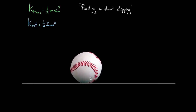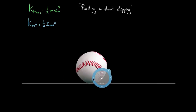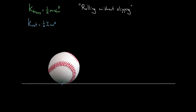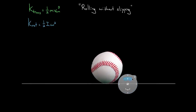This ball is going to be moving forward, but it's not going to be slipping across the ground. There's going to be no sliding motion at the bottom surface, which means at any given moment — and this is a little weird to think about — this baseball rolling across the ground has zero velocity at the very bottom. That bottom surface isn't actually moving with respect to the ground, because otherwise it would be slipping or sliding. So this point in contact with the ground has zero velocity.